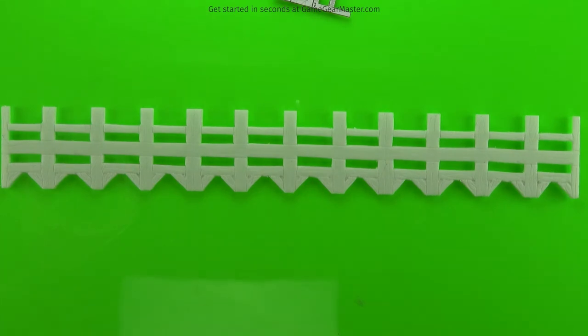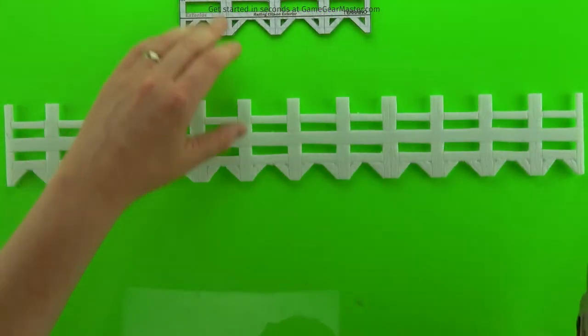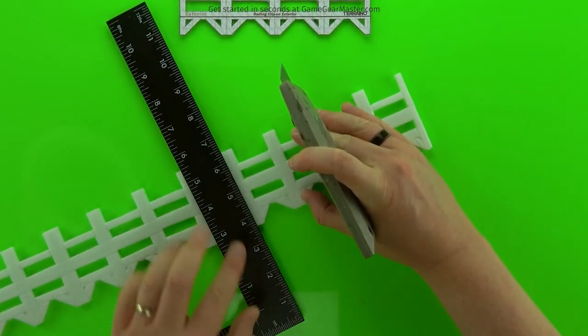And then it's time to cut out the individual components. So first we're going to cut out the railings themselves. So here I'm going to cut out a four square wide railing.